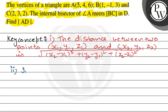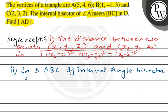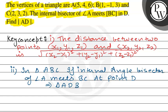Key Concept 2: In triangle ABC, if the internal angle bisector of angle A meets BC at point D, then BD divided by DC equals AB divided by AC. This is the angle bisector theorem.